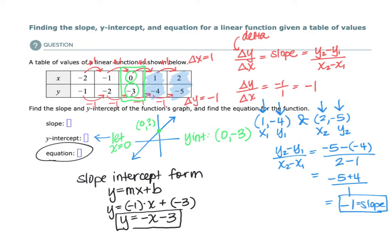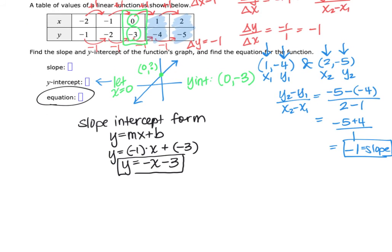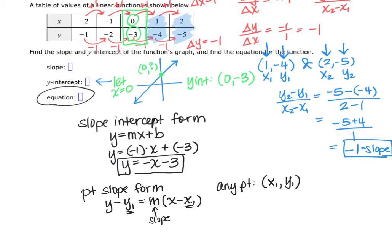Now, I'm also going to mention the other form that does get used, which is often called the point-slope form of a line. And the point-slope form of a line is y minus y sub 1 equals the slope times x minus x sub 1, where again, m is your slope. But this time, the x sub 1 and the y sub 1 can be any point on the line. It doesn't have to be the y-intercept.